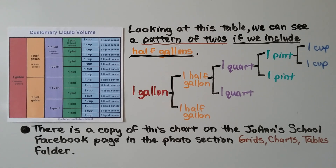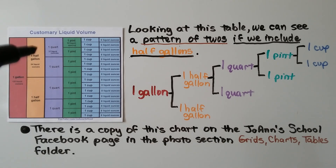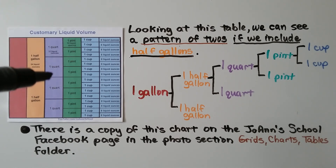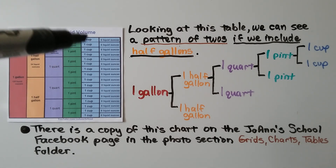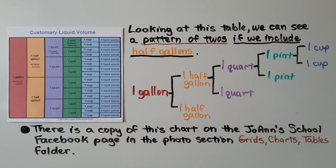Looking at the table, we can see a pattern of twos if we include half gallons: one gallon equals two half gallons, one half gallon equals two quarts, one quart equals two pints, and one pint equals two cups. There's a copy of this chart on the Joanne School Facebook page in the Grids, Charts, and Tables folder, where you can find other useful charts to print and copy.